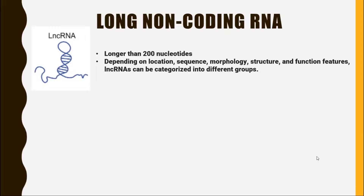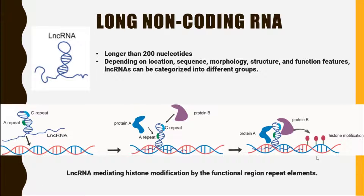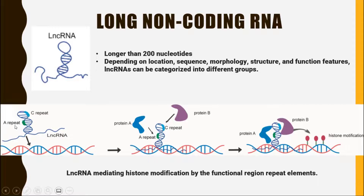The third most common function of long non-coding RNA is that they have some kind of repeat units, and these repeat units can recruit different proteins, and these proteins can do histone modifications. This is the DNA double helix structure and this blue line is again representing the long non-coding RNA. In this long non-coding RNA, we have two repeats — repeat A and repeat C.